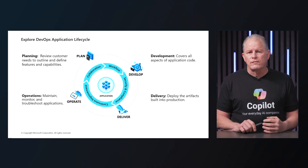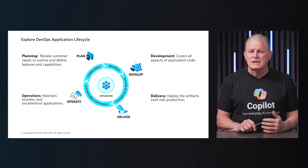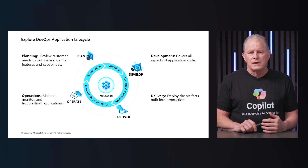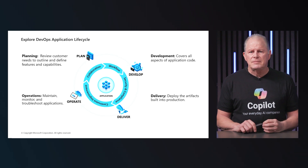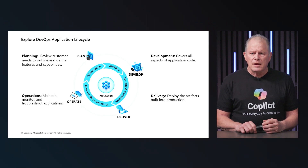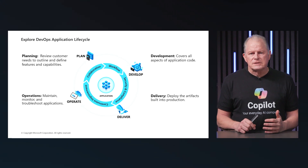This is achieved through an iterative loop of the application lifecycle and its four phases. Planning involves reviewing customer needs to outline and define the features and capabilities of the software to be developed. It sets the foundation for the entire development process by ensuring that the team understands the requirements and goals. The development phase covers all aspects of the application code.